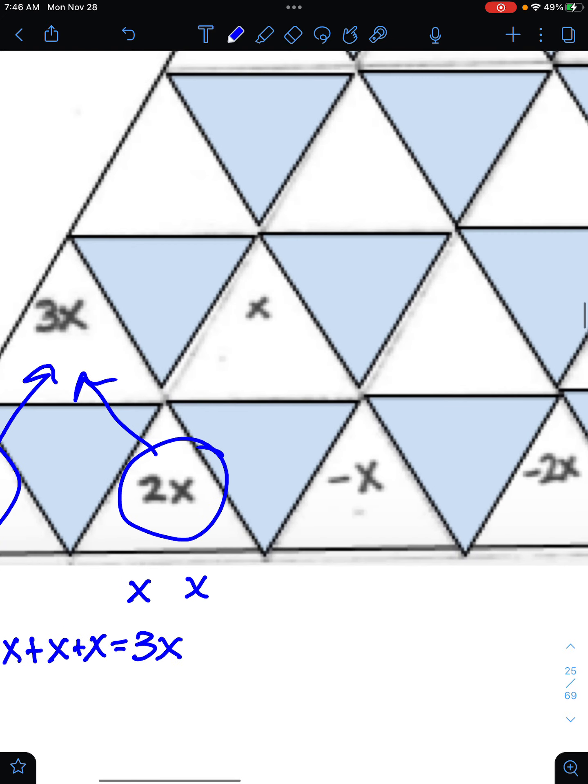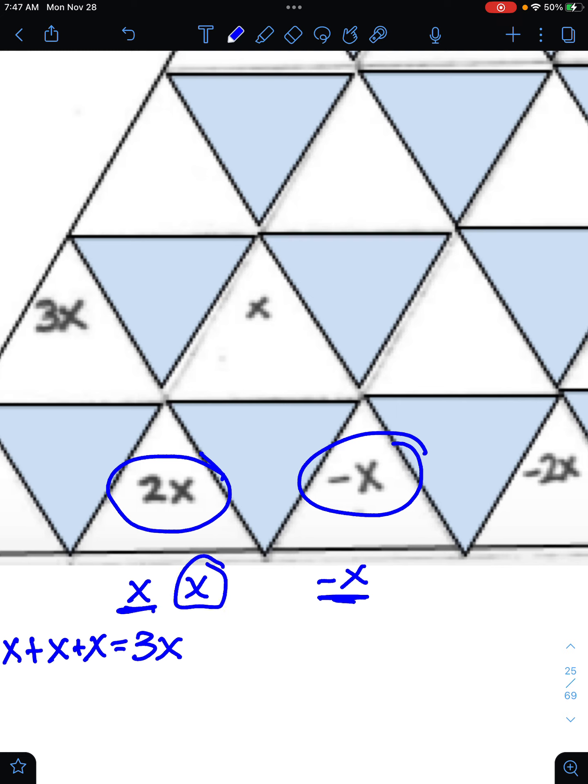Let's move down one. Here, we have 2x and negative x being combined. So I still have my 2x's from before, and now I have a negative x. x and negative x are opposites, so those would cancel out, leaving us with just the single x as our answer.